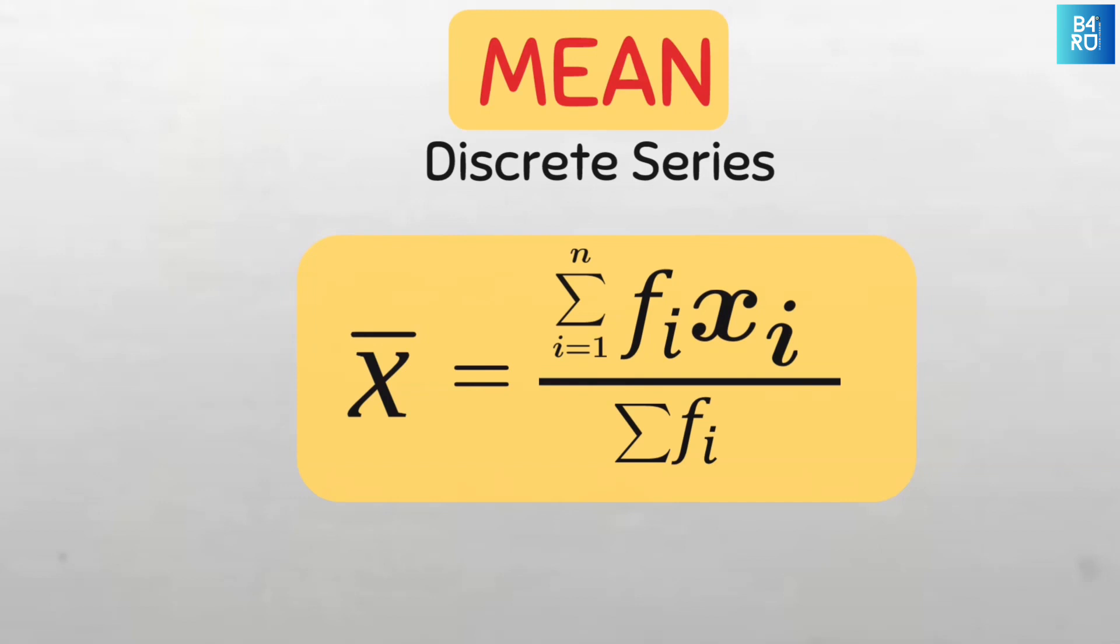of each frequency and each value in the dataset from the first value to the last value of x, all divided by the sum of all the frequencies which is the same as the number of values.